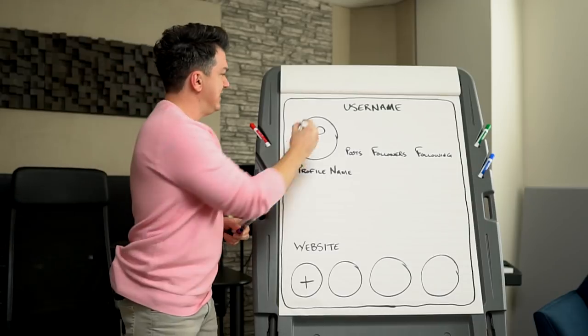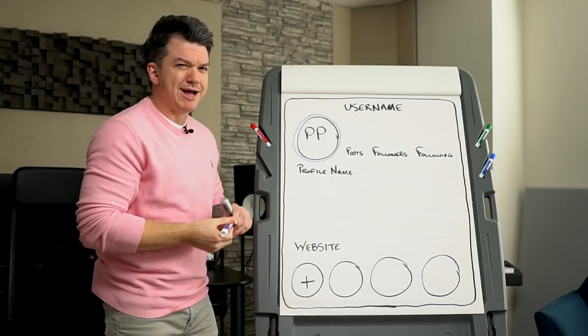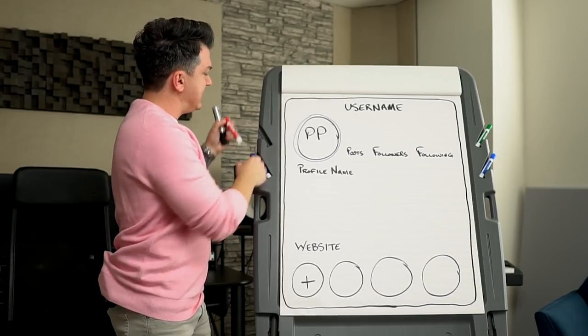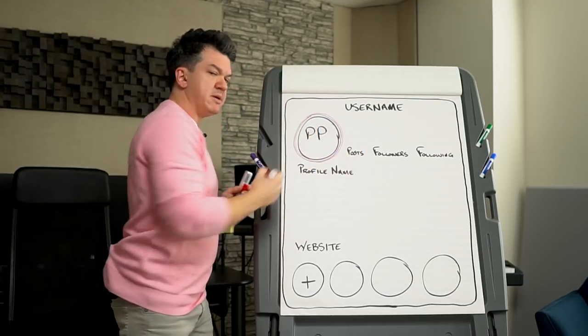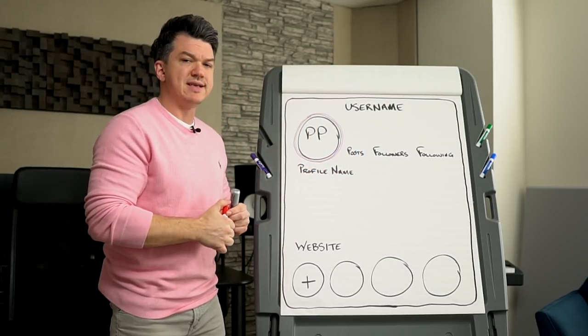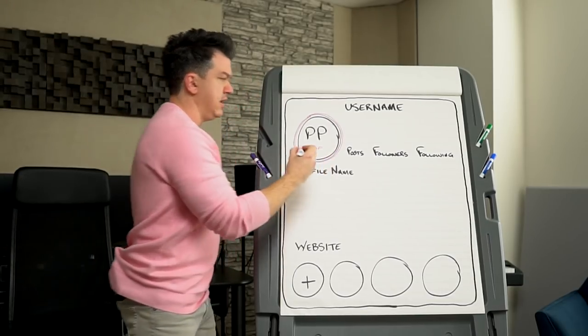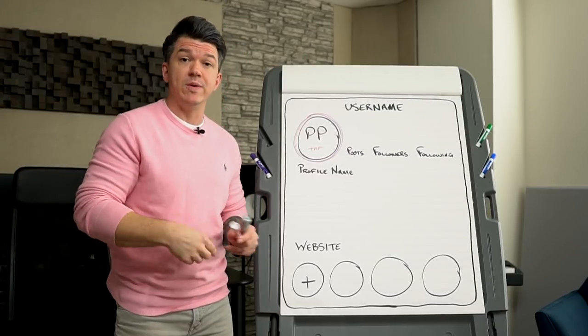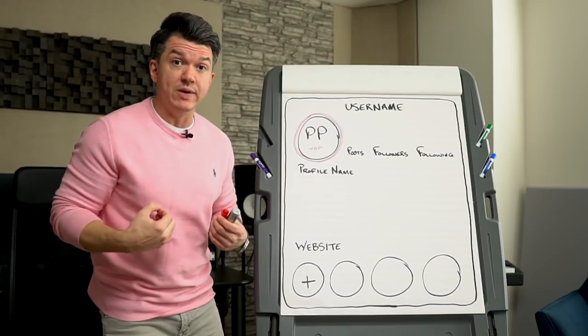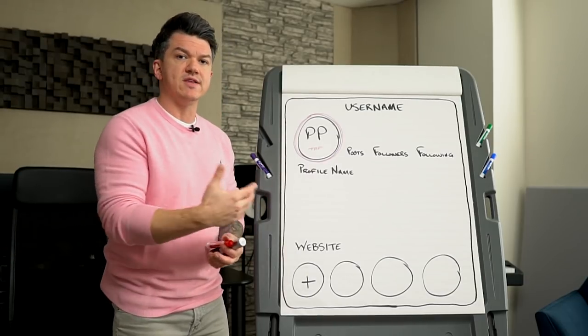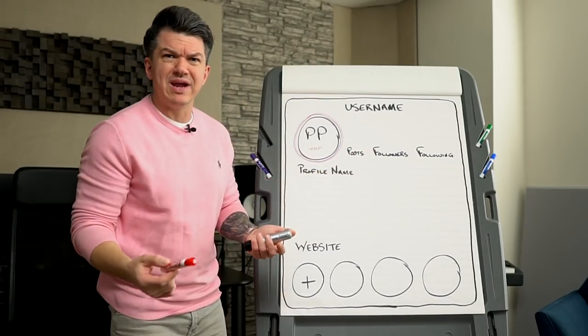The second thing that most people understand when it comes to the platform is this little ring around here. This little ring around here is usually purple and orange. When you load up somebody's profile and you see that, that means that they have Instagram stories. If you tap this, it's going to open those up and you're going to see what they're doing right now, their activity.